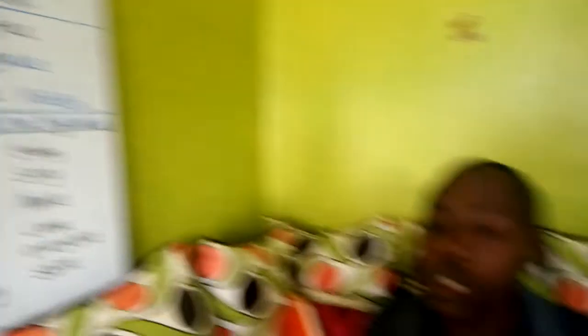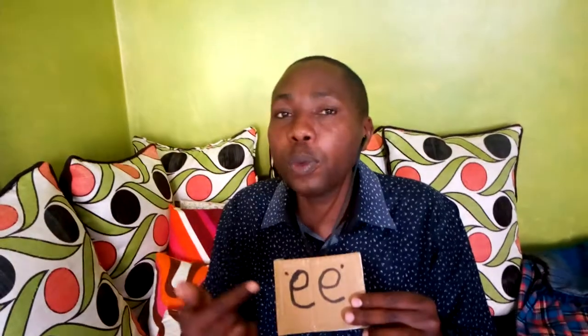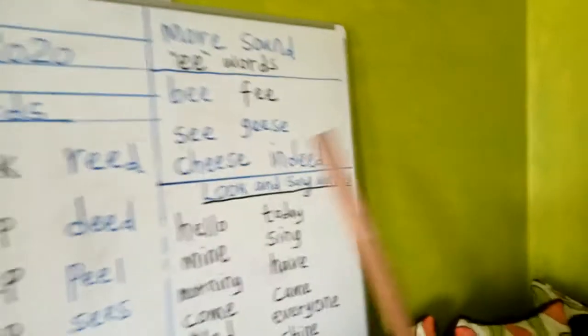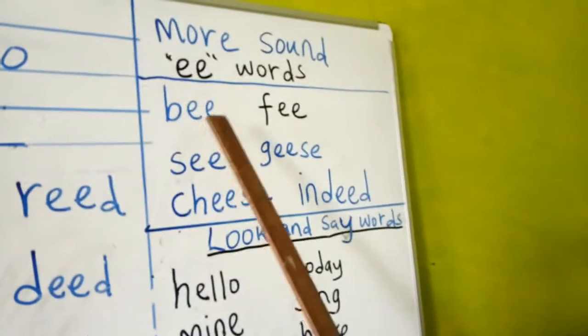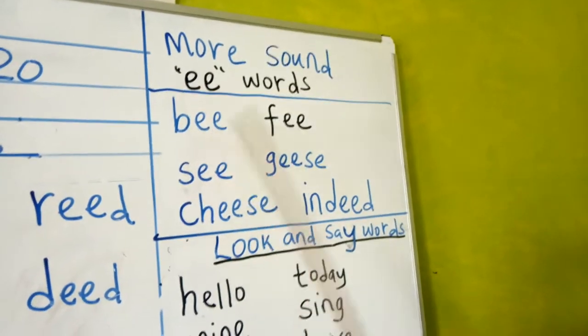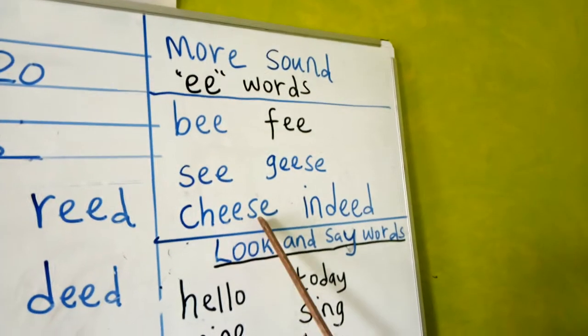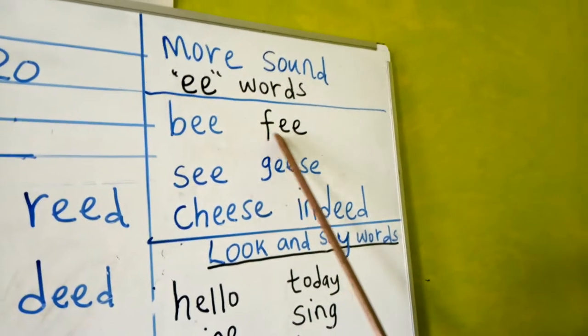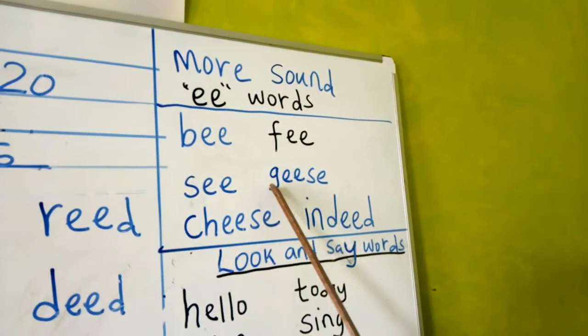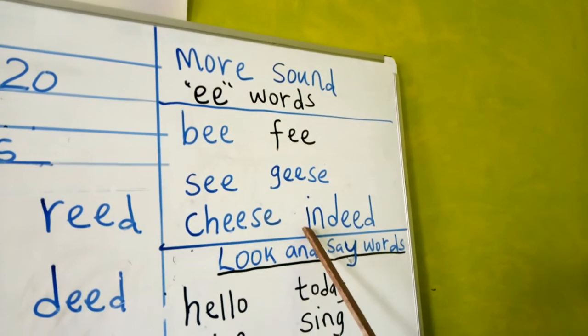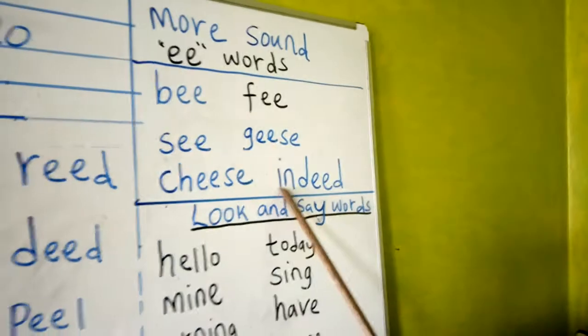So when you put E and E together like that, it gives you that sound 'ee'. There are other words that have that sound 'ee' — a word like 'b', a word like 'c', a word like cheese, a word like fee, and the word indeed.